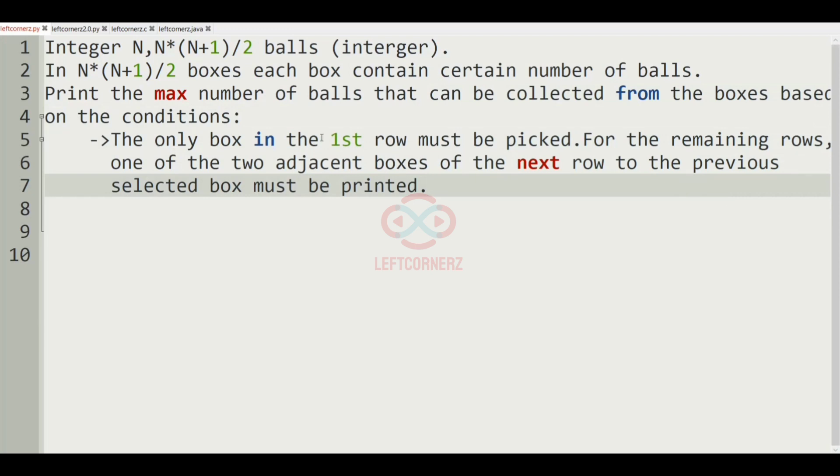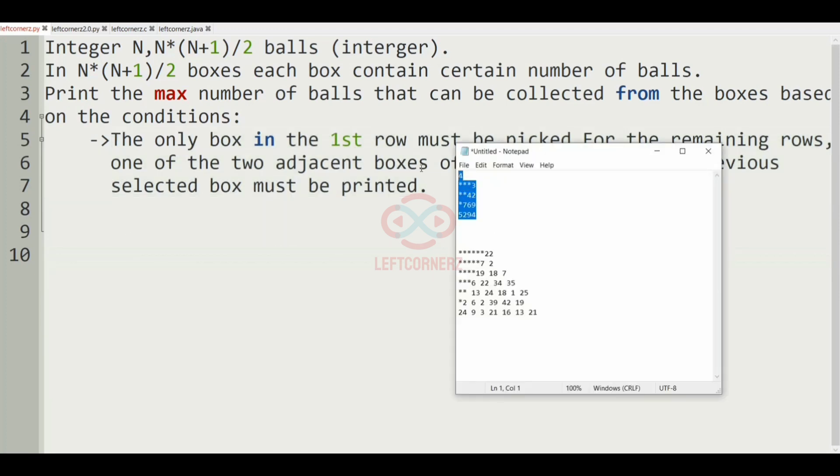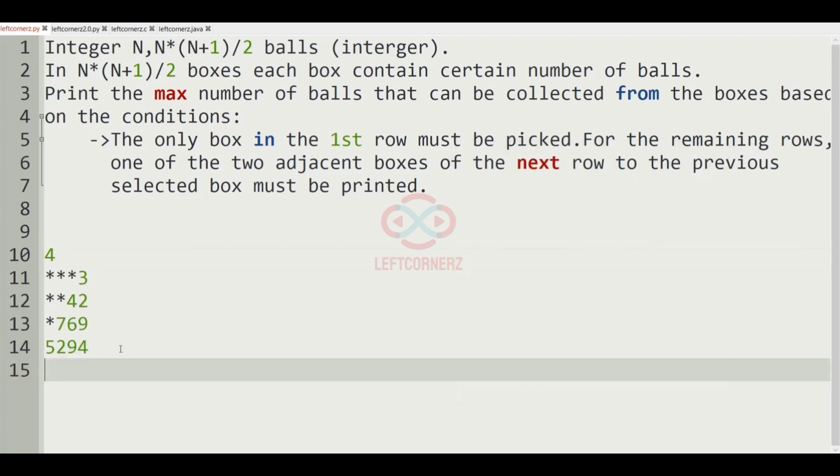The condition is: the only box in the first row must be picked. For the remaining rows, one of the two adjacent boxes of the next row to the previous selected box must be printed. This is our first test case.